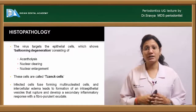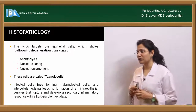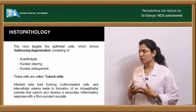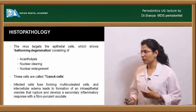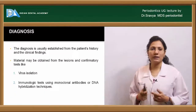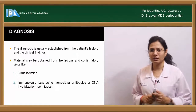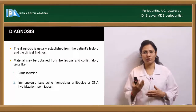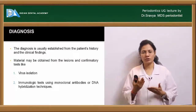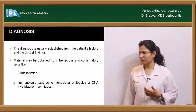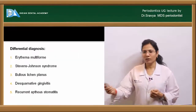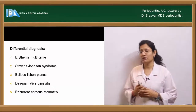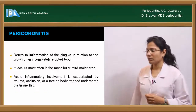Histopathology: typical features include Tzanck cells due to ballooning degeneration of epithelial cells, intra-epithelial vesicle formation, acantholysis, nuclear clearing, and nuclear enlargement. Diagnosis is mostly clinical, supported by history. Culture of vesicle fluid and immunological tests can isolate the virus. Differential diagnosis includes erythema multiforme, Stevens-Johnson syndrome, bullous lichen planus, desquamative gingivitis, and recurrent aphthous stomatitis.